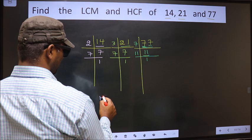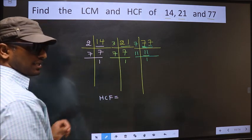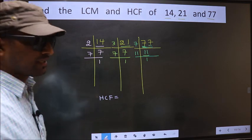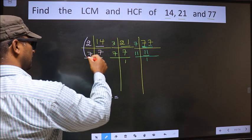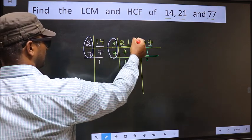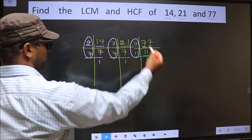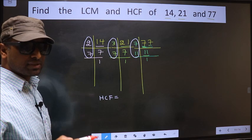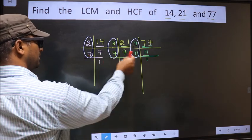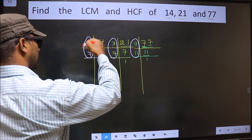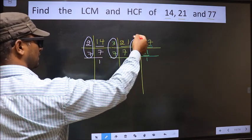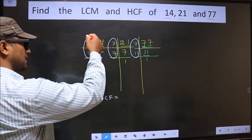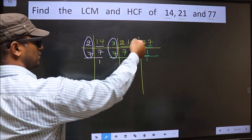Now our HCF is the product of numbers which should be present over here, and here, and also here. I repeat, HCF is the product of numbers which should be present in these three places. So now, let us find the numbers which are present here, here, and also here.